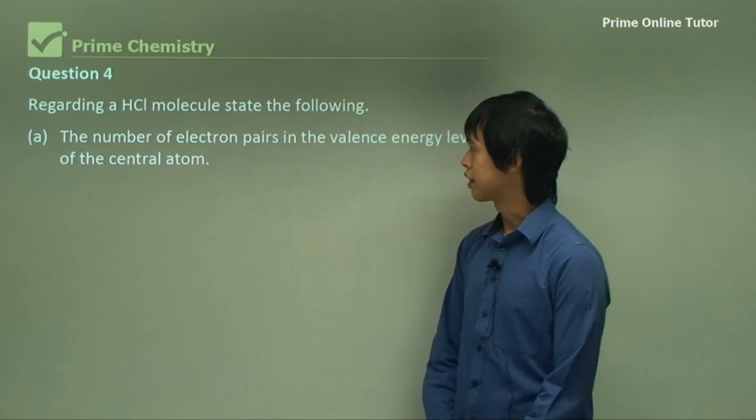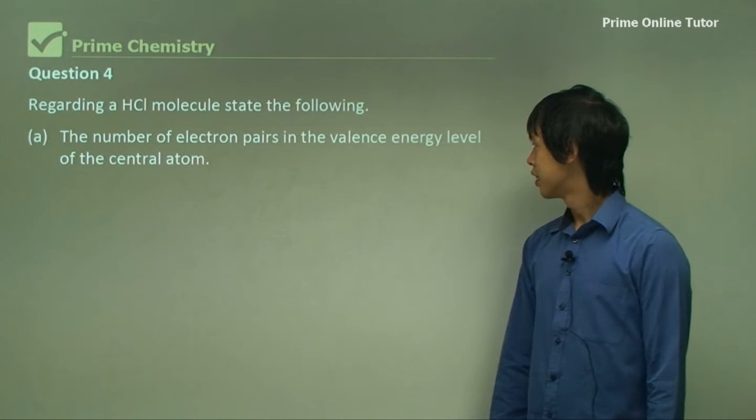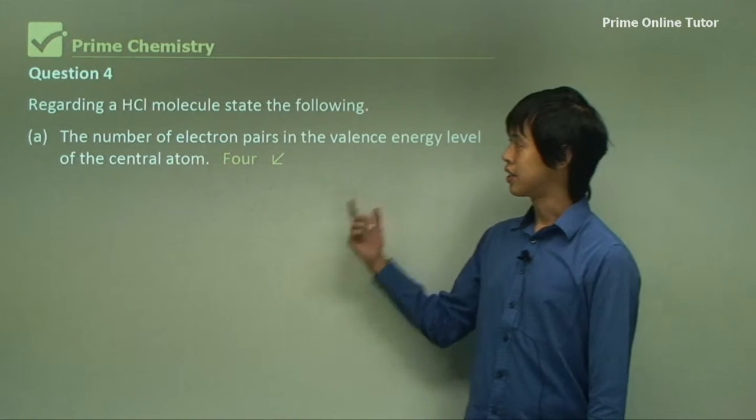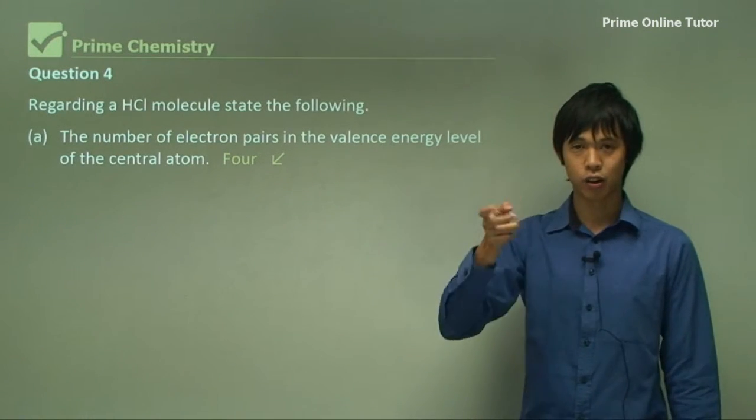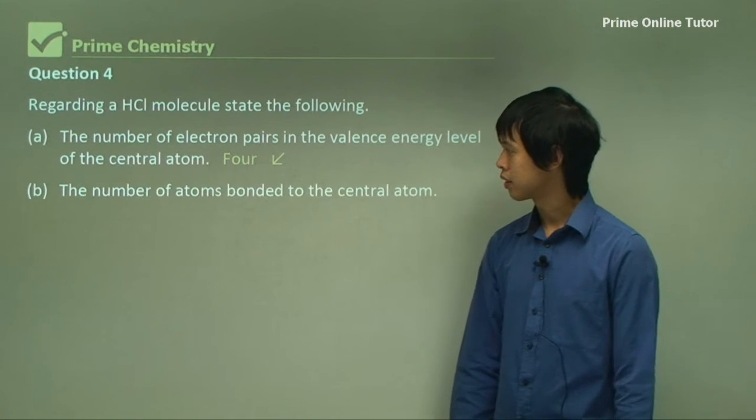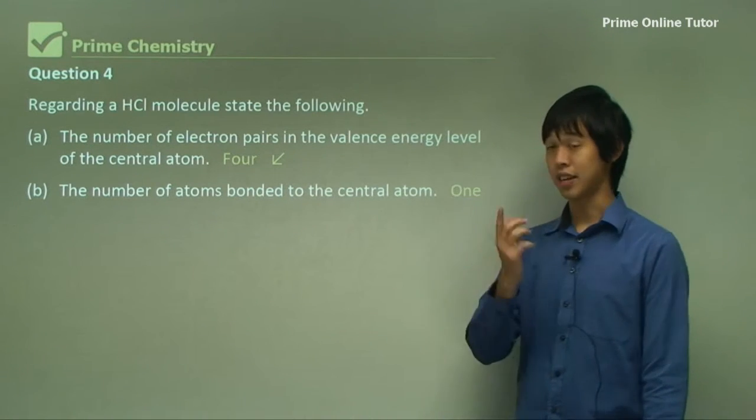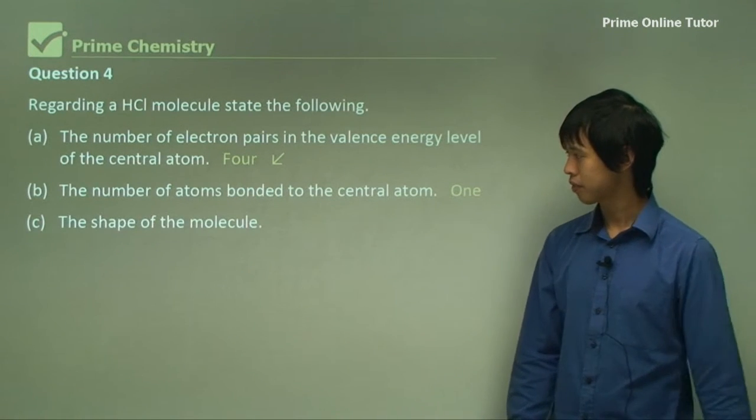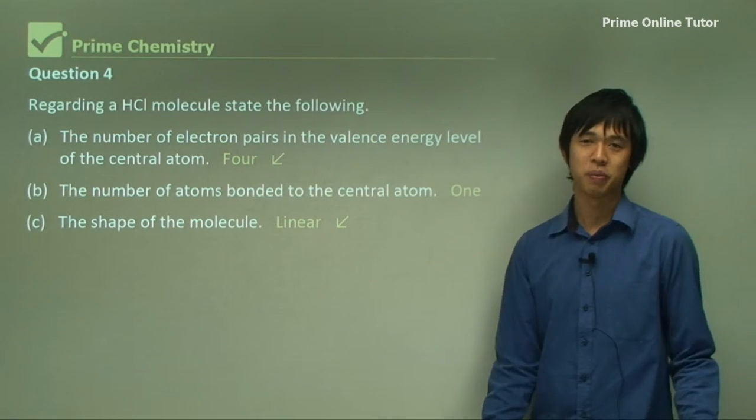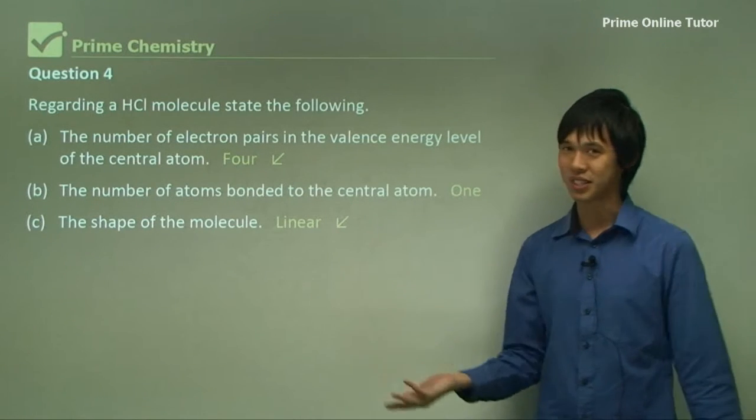Regarding a HCl molecule, state the following. The number of electron pairs in the valence energy level of the central atom, there's four. So Cl has three lone pairs and a bonded pair. So there's four electron groups. The number of atoms bonded to the central atom, there's one. That's the hydrogen. The shape of the molecule, it's linear. There's no other shape it could be, because it would just form a straight line. Two points form a line. So that's the only shape that we can get.